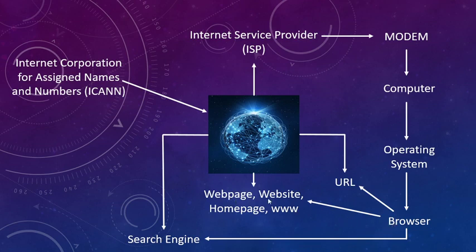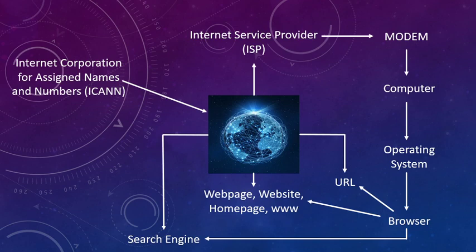WWW stands for World Wide Web, meaning you are accessing any website globally. Now, what is a web page? A web page is similar to a page in your book where information is written or some resource is provided. But a web page is an online page where some information is given, which can be accessed by any user who visits that page.